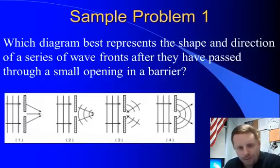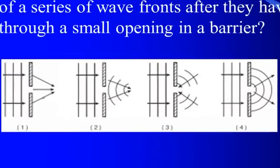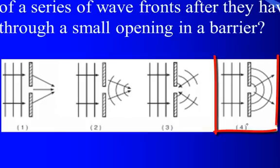So, let's look at some sample problems around diffraction. Which diagram best represents the shape and direction of a series of wave fronts after they have passed through a small opening in a barrier? Well, as we talked about, waves passing through a small opening almost behave as if they're a point source. So, if the waves are coming from the left, the correct answer here must be number 4. Waves are coming from the left, and as they go through the opening, it behaves almost as if they're a point source. Number 4.